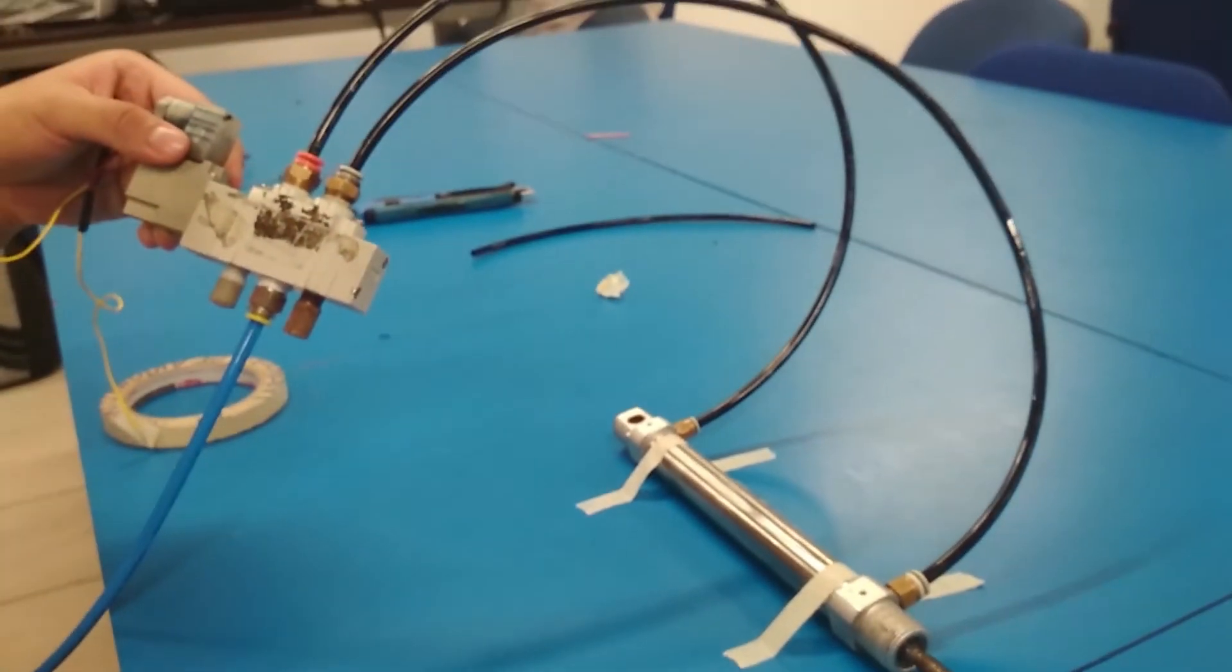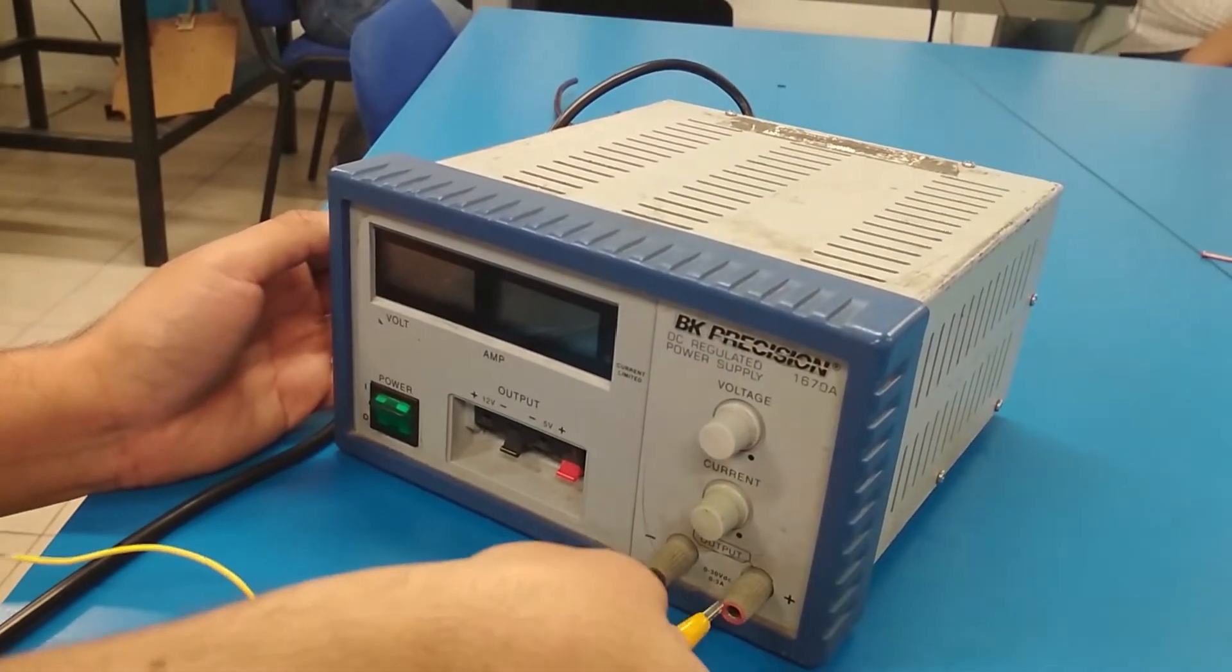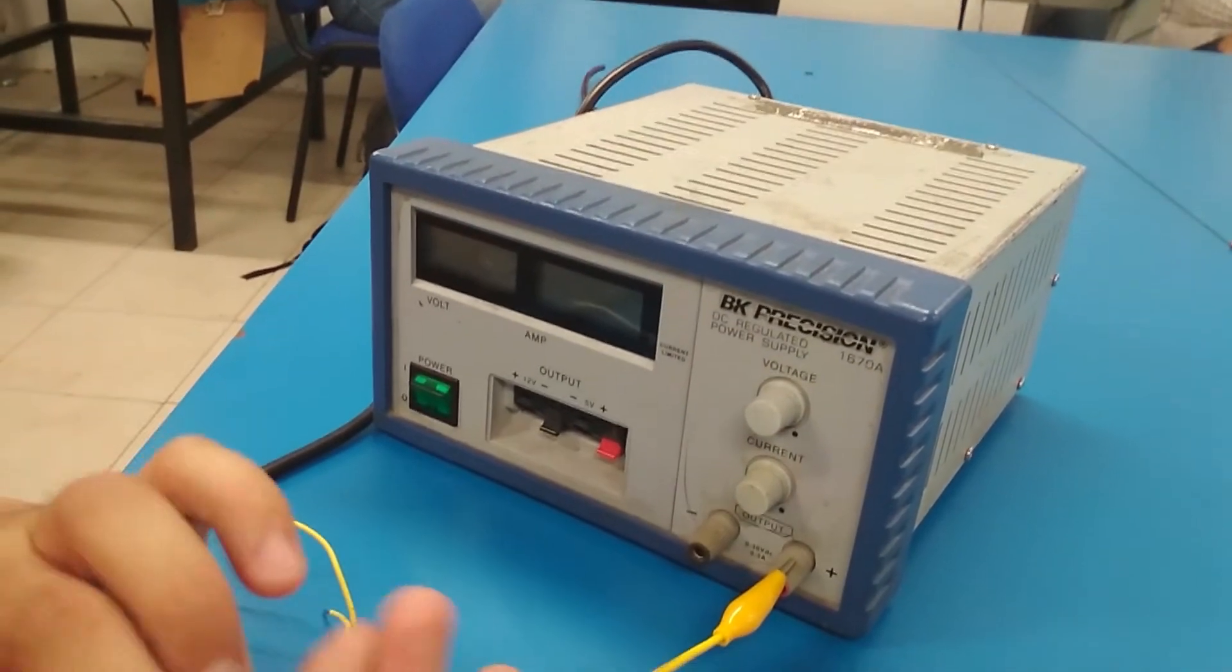Here we can see the final connection of the piston and the electropulse. Now we connect wires to the voltage source.